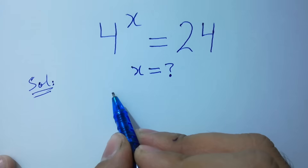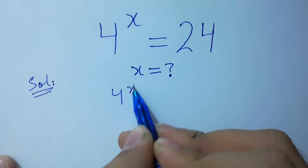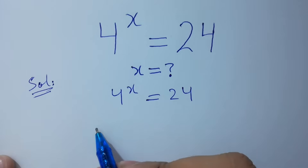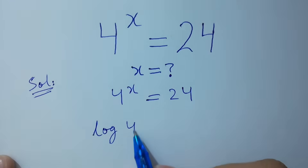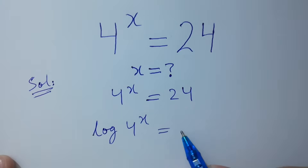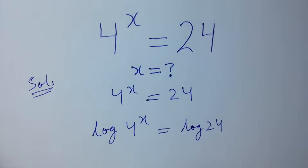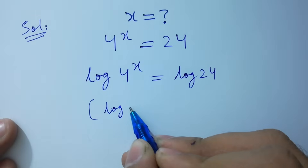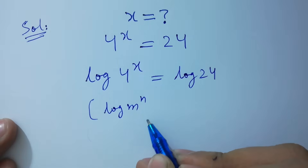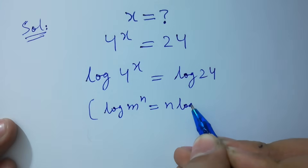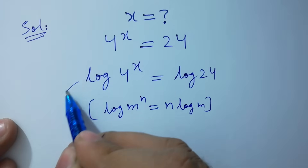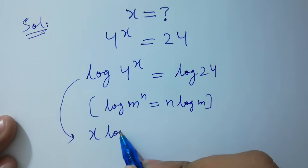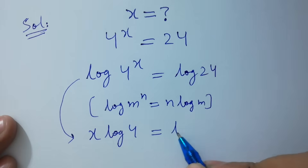We have 4 to the power x equal to 24. To solve this, take log on both sides. Since log m to the power n equals n log m, it will be equal to x log 4 equal to log 24.